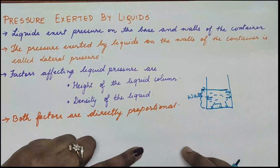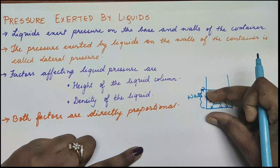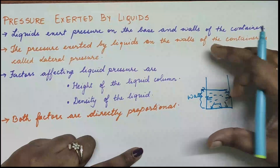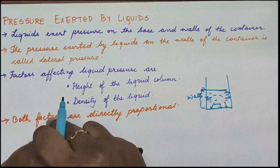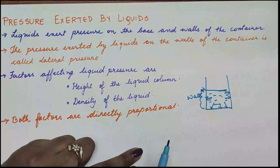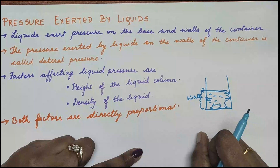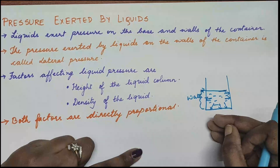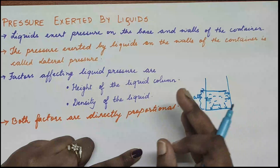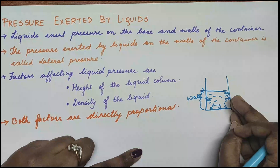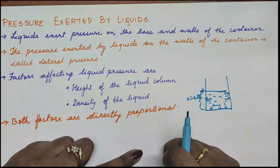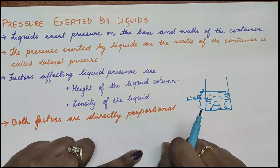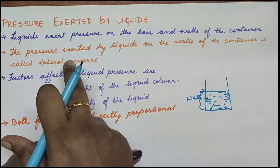Liquid pressure depends upon certain factors. The height of the liquid — if the height is less, the pressure exerted is less; if the height is more, the pressure is more. These factors are directly proportional. It also depends upon density: when density is more, pressure is more; when density is less, pressure is less. For example, kerosene has lesser density than water, so the pressure exerted by kerosene is lesser than that exerted by water.